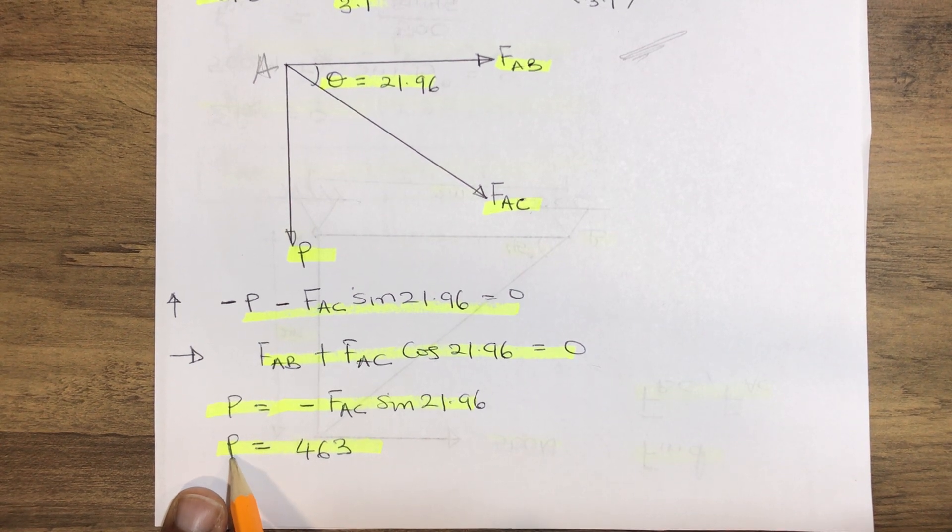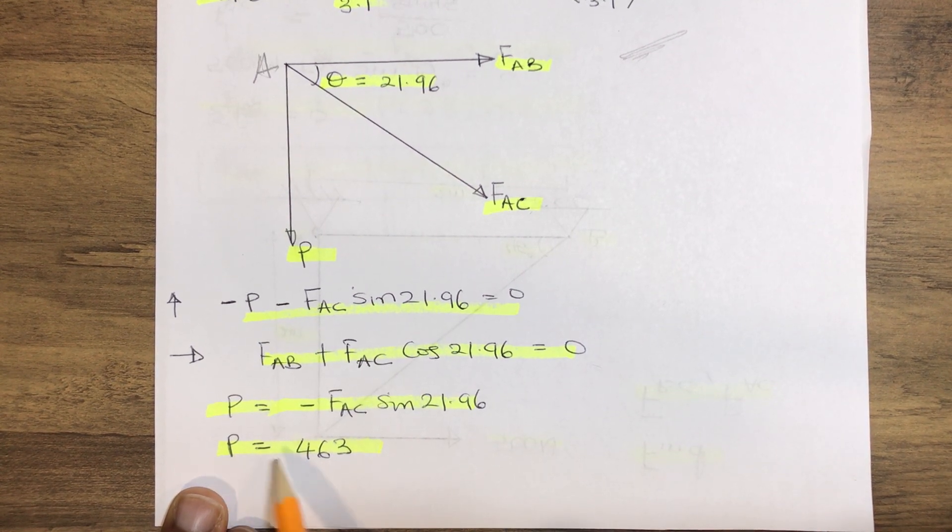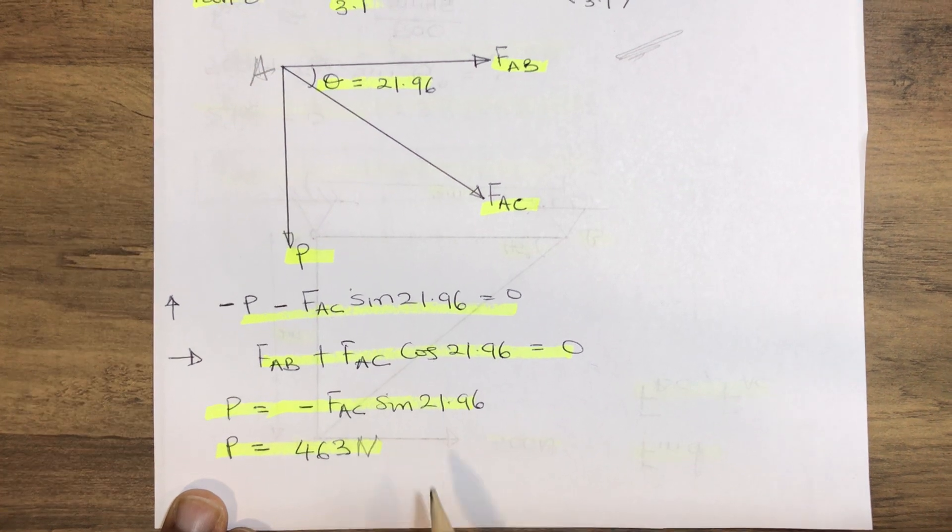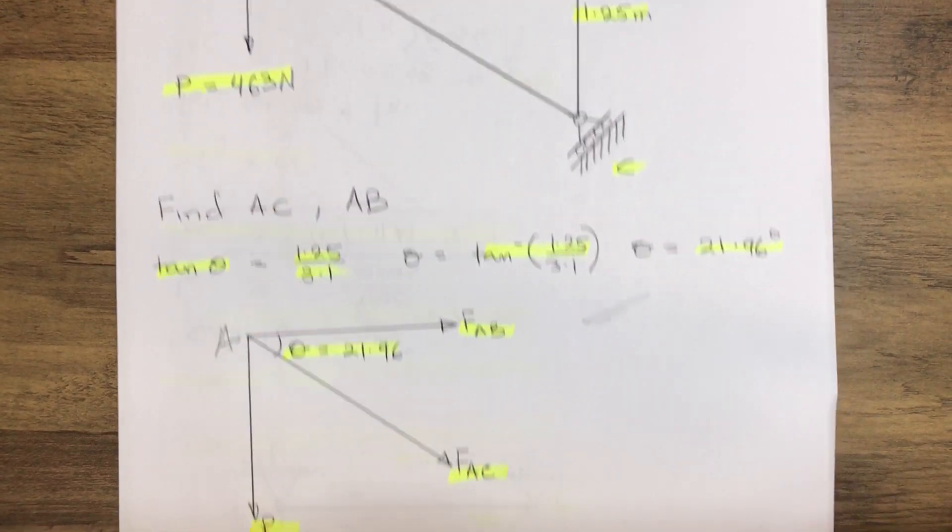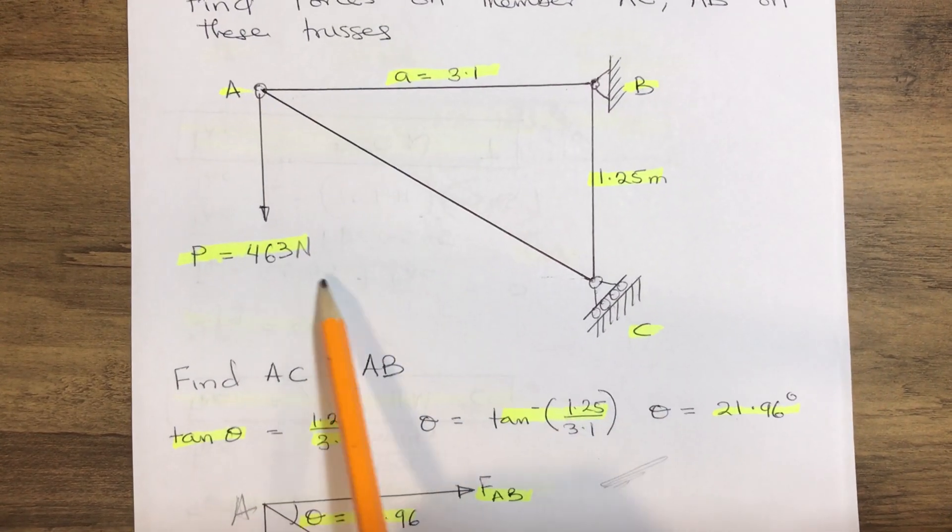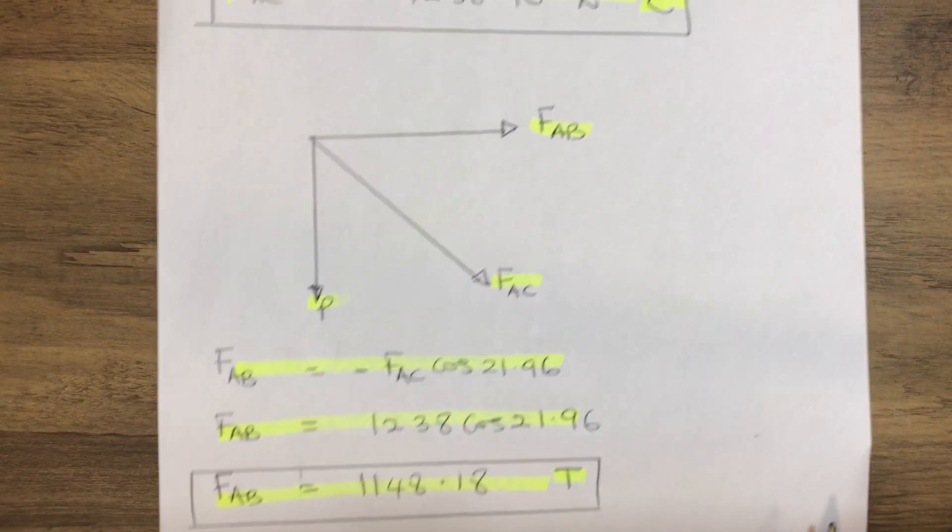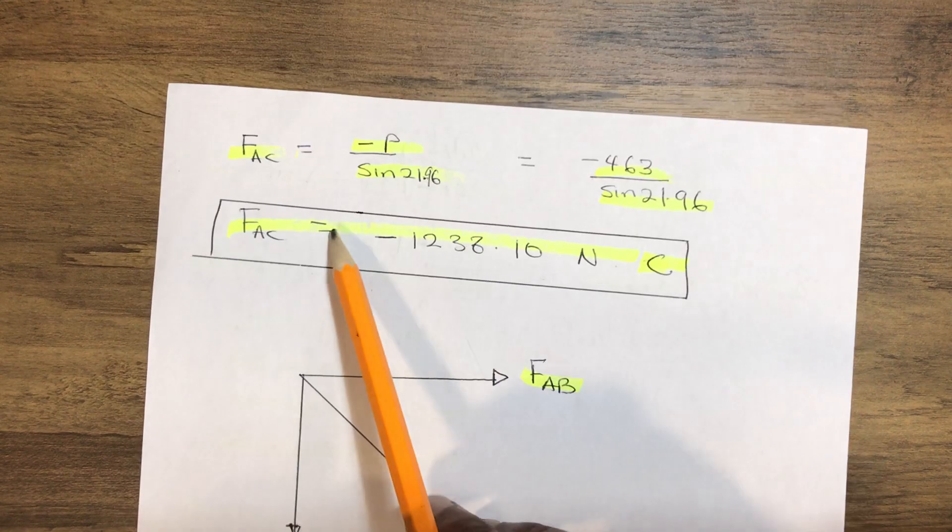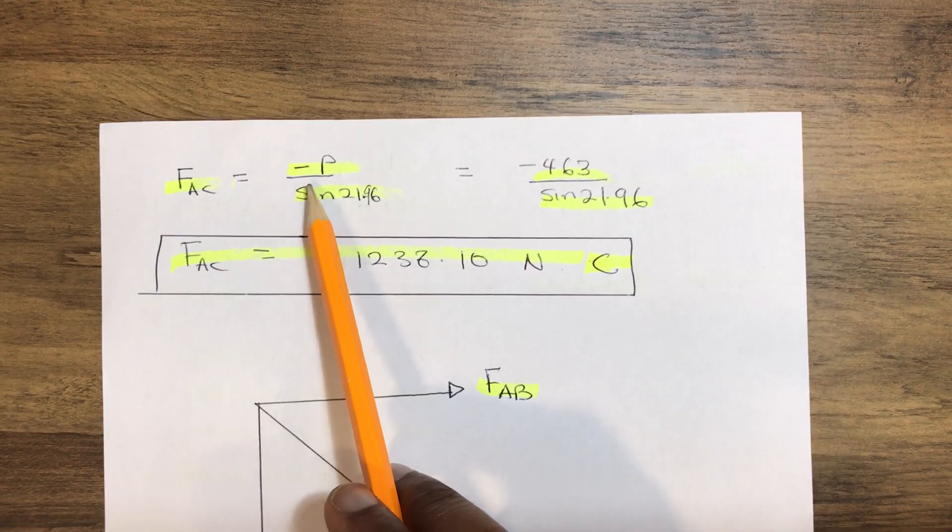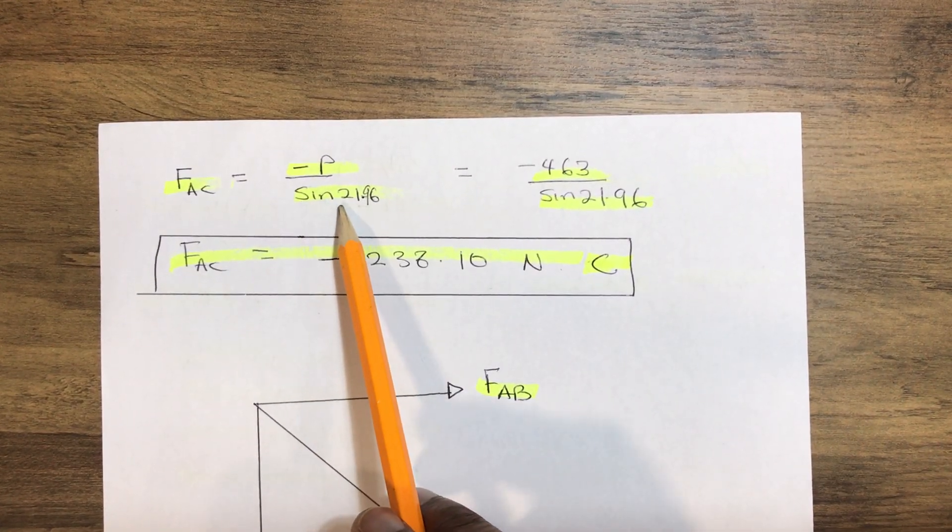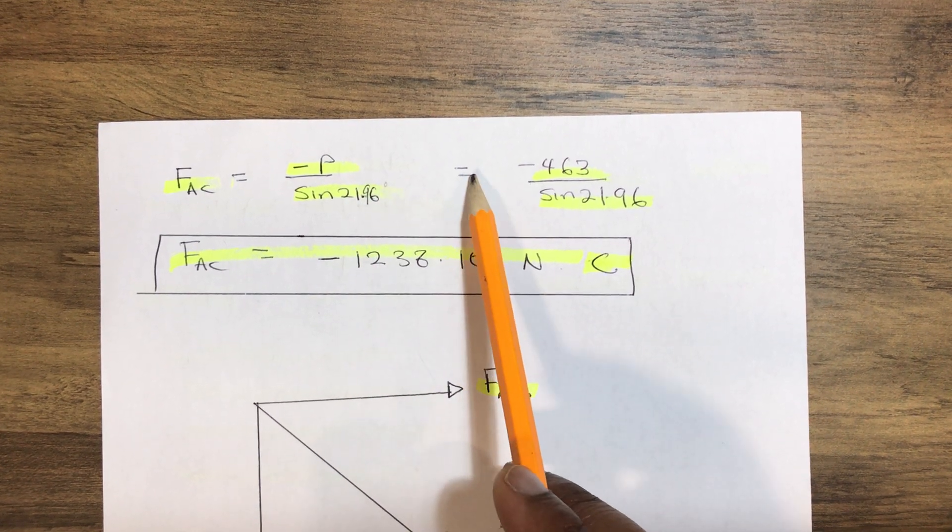Don't let us forget that P equals 463 Newton from our diagram. So therefore our FAC equals minus P over sine 21.96 degrees.